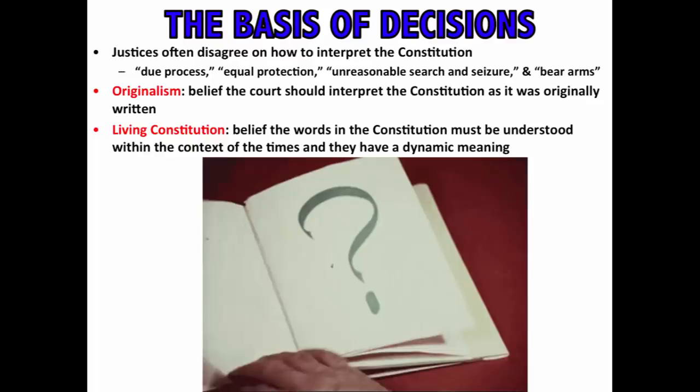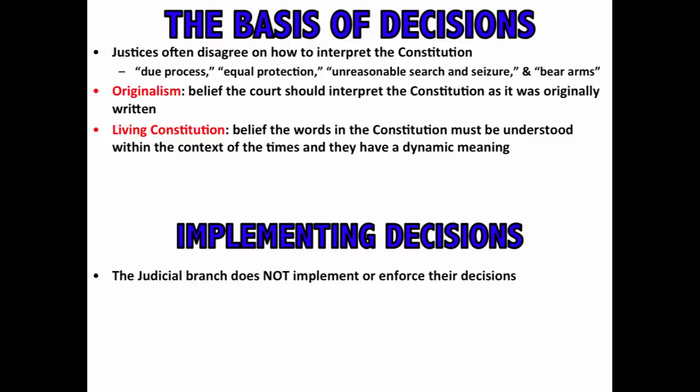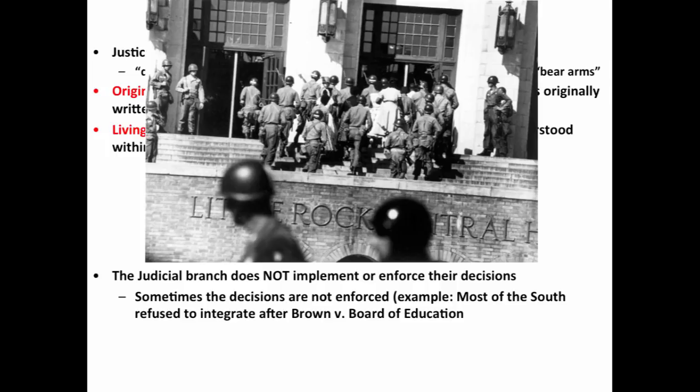Regardless of the decision, what about implementing those decisions? The judicial branch does not implement or enforce their decisions — that is the role of the executive and legislative branches. We have seen through history that sometimes decisions are not enforced. A great example is that most of the South refused to integrate after the Brown v. Board of Education decision in 1954, and troops had to be sent in by the federal government in places like Little Rock, with widespread resistance to the decision.